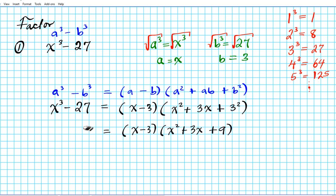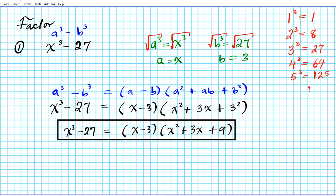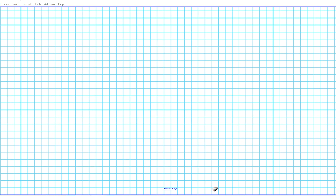Our final answer is x minus 3 times x squared plus 3x plus 9. This is the complete factorization of x to the third minus 27.